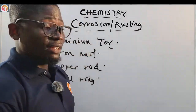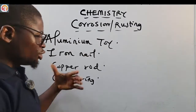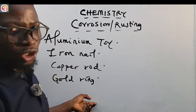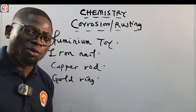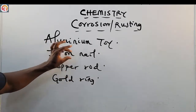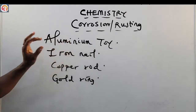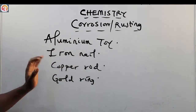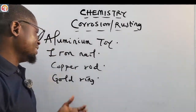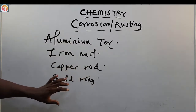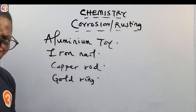Let's say you left these four materials outside for 20 years and came back to check. You would be shocked to see that the gold ring, the copper rod, and even the aluminum toy may not have corroded much. But the iron nail will have the worst level of corrosion. That is because iron is very reactive — more reactive than copper and gold, as we saw in the reactivity series.